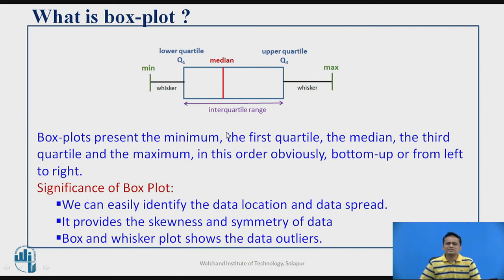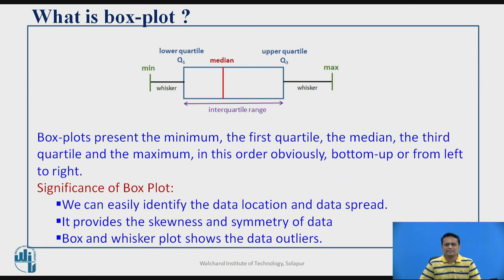The box plot is used to visualize univariate location statistic parameters. It gives you information about the skewness and symmetry of the data. If the box plot is symmetric, the median is exactly at the center. This plot also gives information about outliers present in the data.